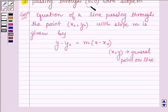So here the given point is 0, 0. That is, here we have x0 is equal to 0 and y0 is equal to 0.